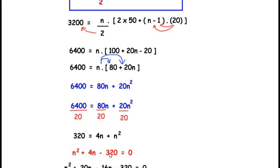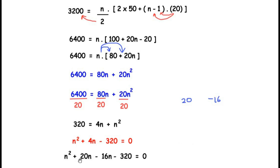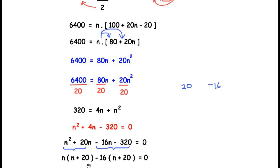The factors are +20 and −16, since 20 × (−16) = −320 and 20 + (−16) = 4. Splitting the middle term: n² + 20n − 16n − 320 = 0. Grouping: n(n + 20) − 16(n + 20) = 0.